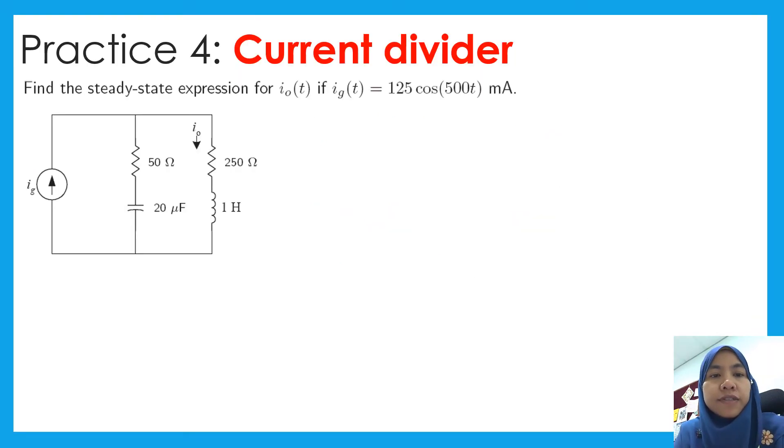Next, given an example of current divider here, they ask you to find I node. And then what is IG in phasor form? IG should be in capital form, capital letter, and then equal to 125 with what is the degree here? This is plus 0 degree. Since the unit is in milliamps, so we should write down in milliamps. What is the angular frequency? This is equal to 500 radians per second.